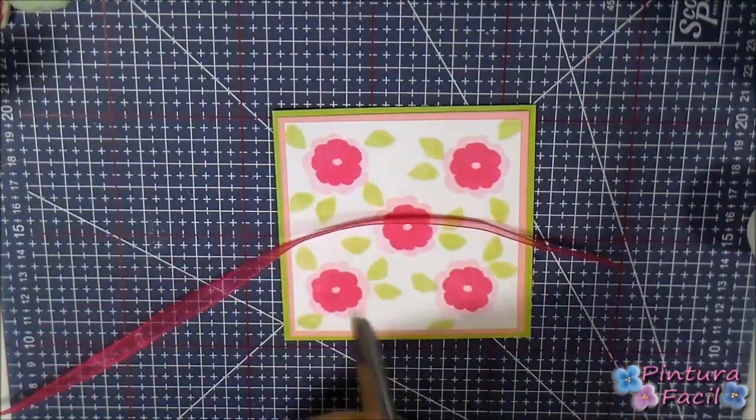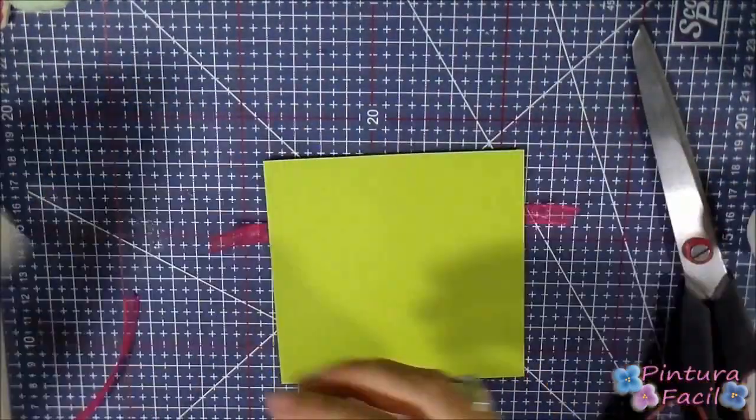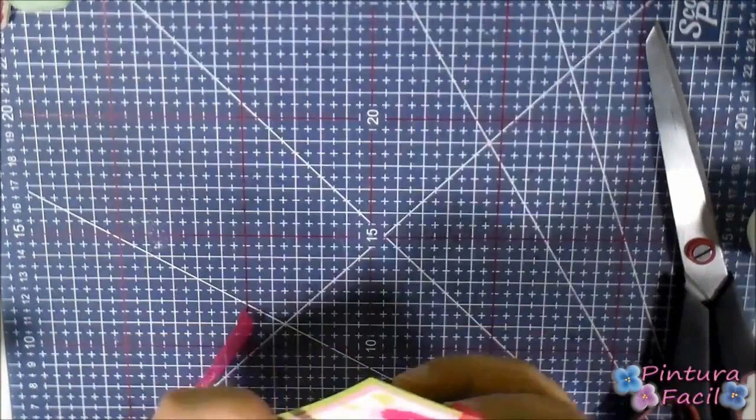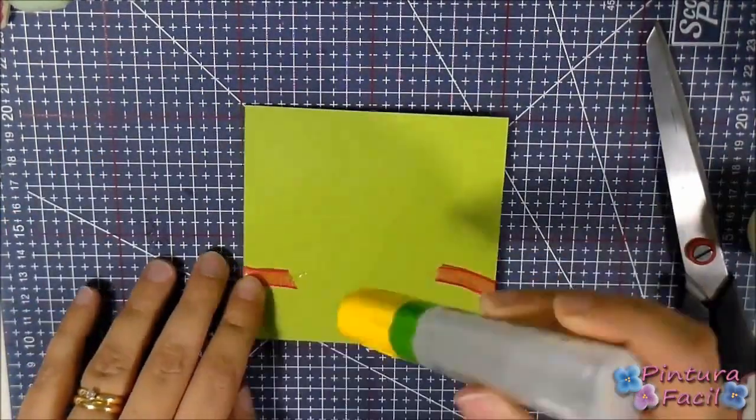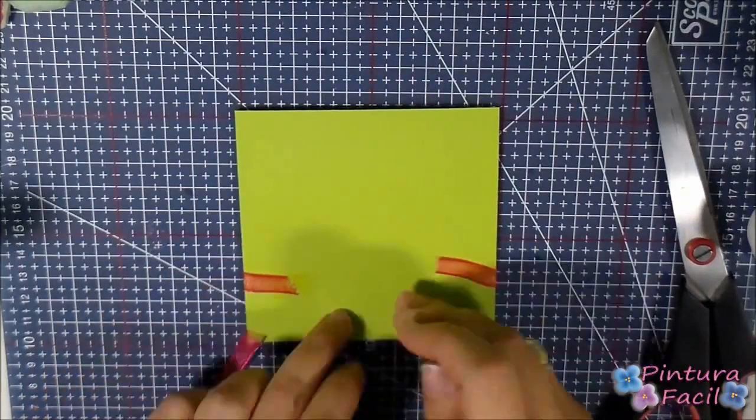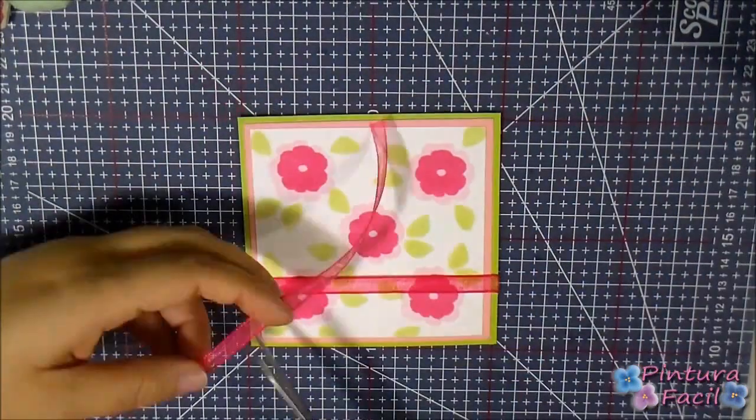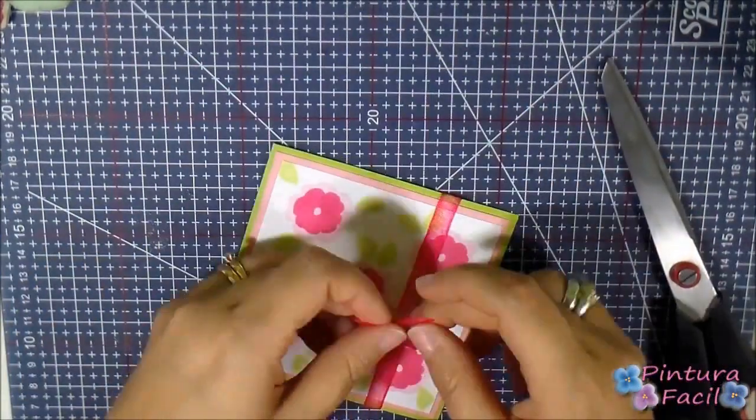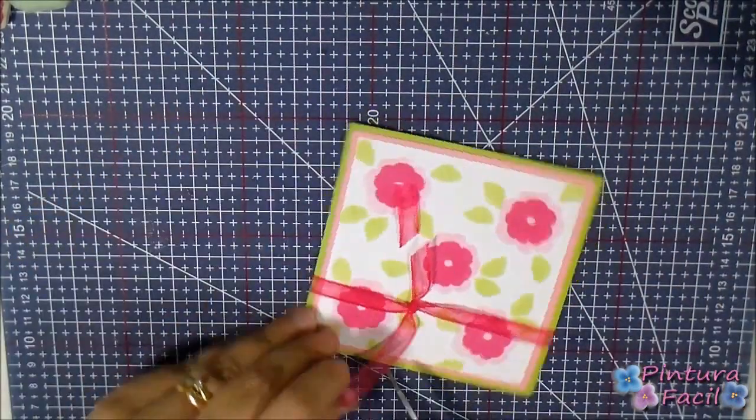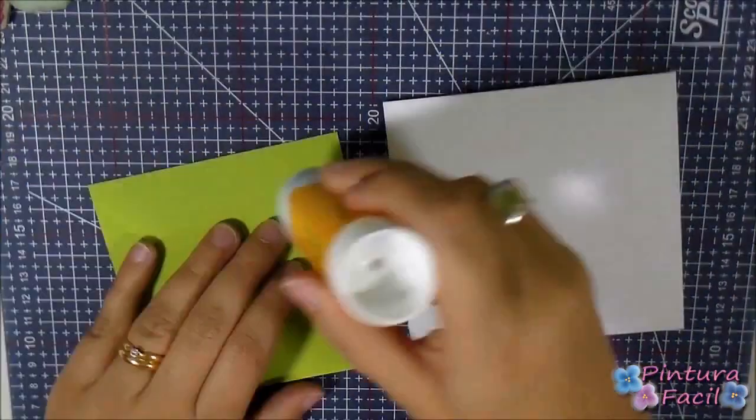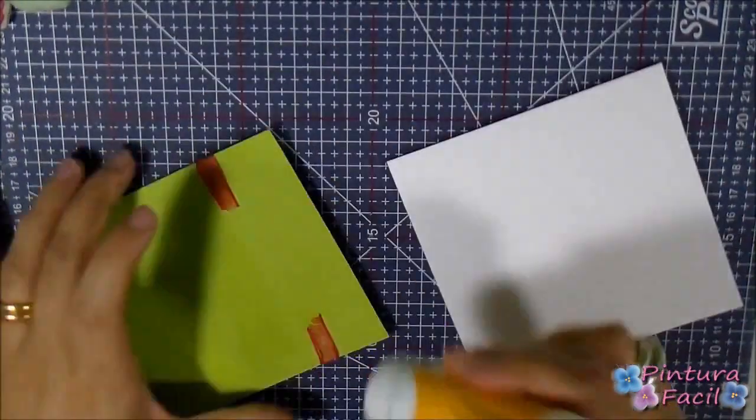Then, decorate both with an organza pink ribbon. Top off your decoration with a knot. For finishing, glue all this on top of the card.